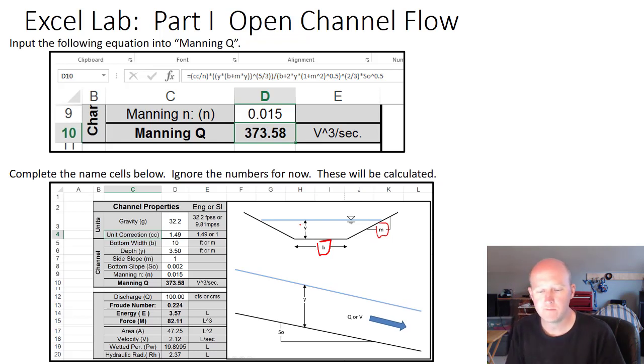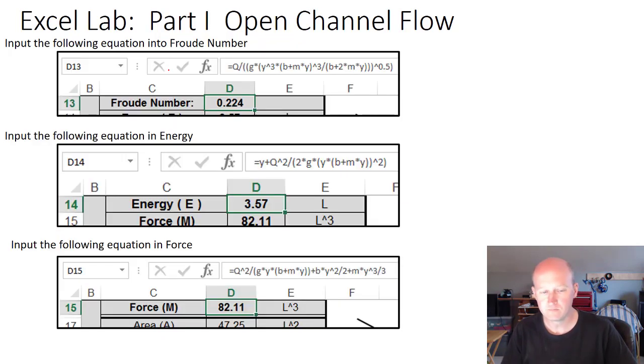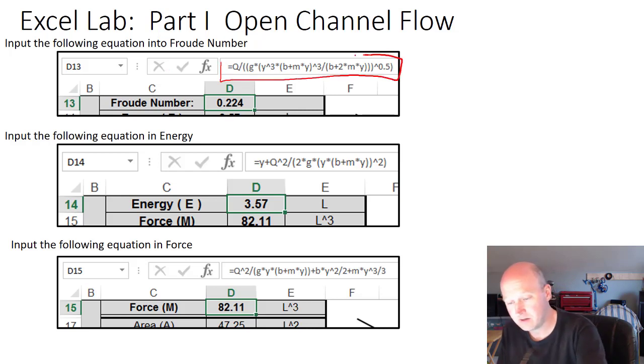So if we put all those variables into the Manning equation, this is the equation that you need to calculate the flow rate instead of the velocity. We're going to do the same thing for the Froude number, again same trapezoidal geometry in this case, but it's going to be for the Froude number.